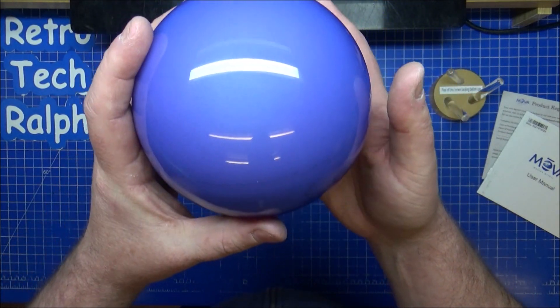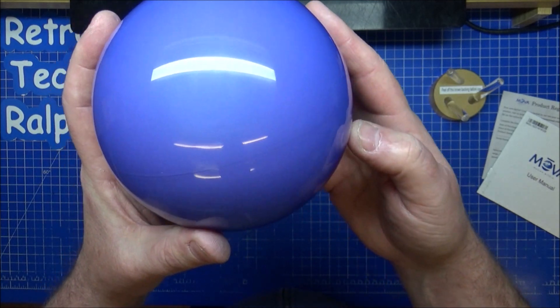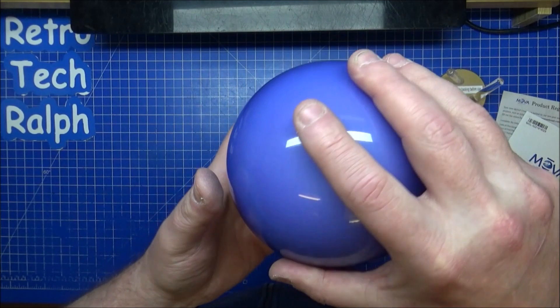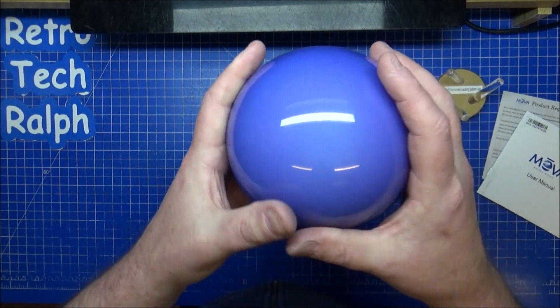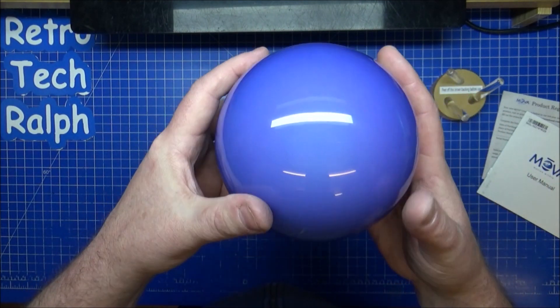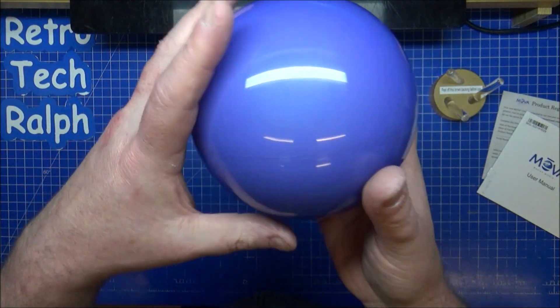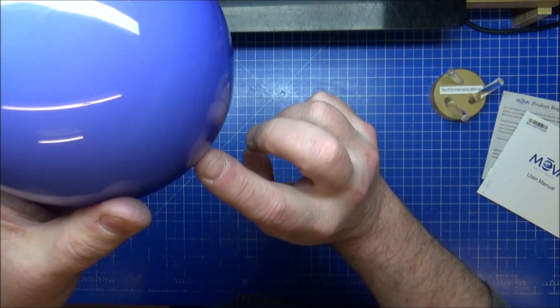MovaGlobes obviously are a plastic ball inside a plastic ball. There's oil inside there, there's no air bubbles which is good. There's a joint in the middle you can tell right there, but I can't show you where all the detail is which is down here.